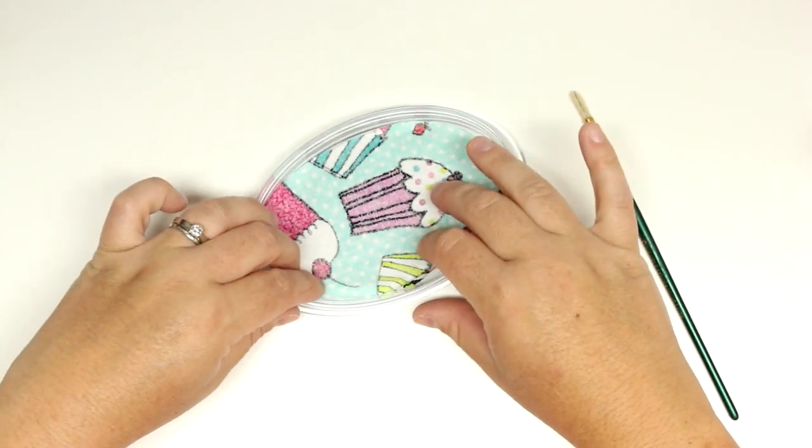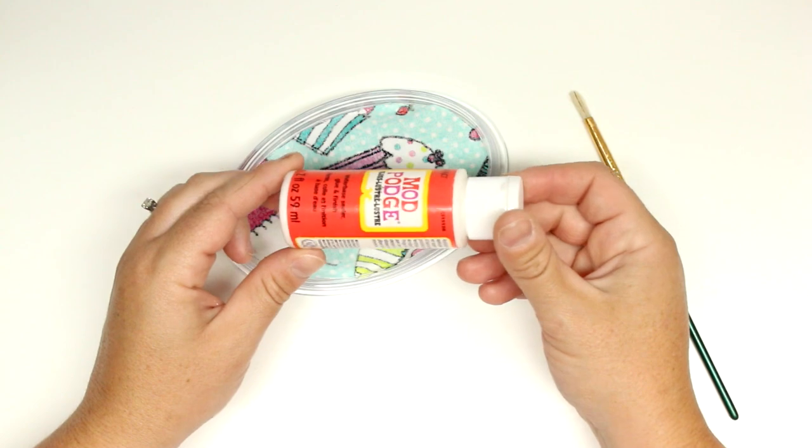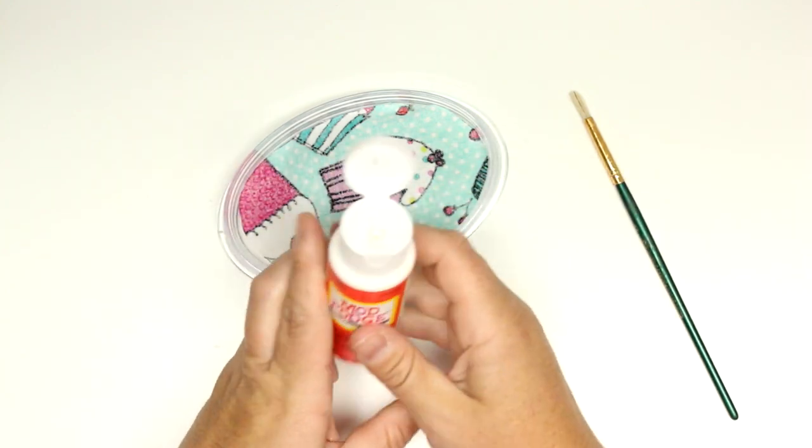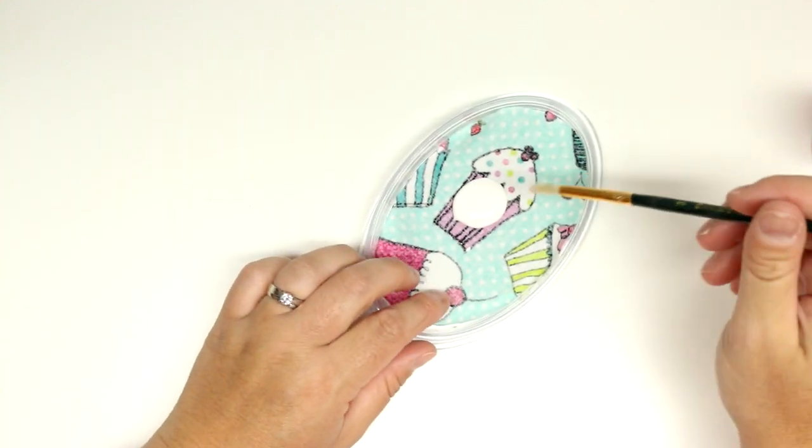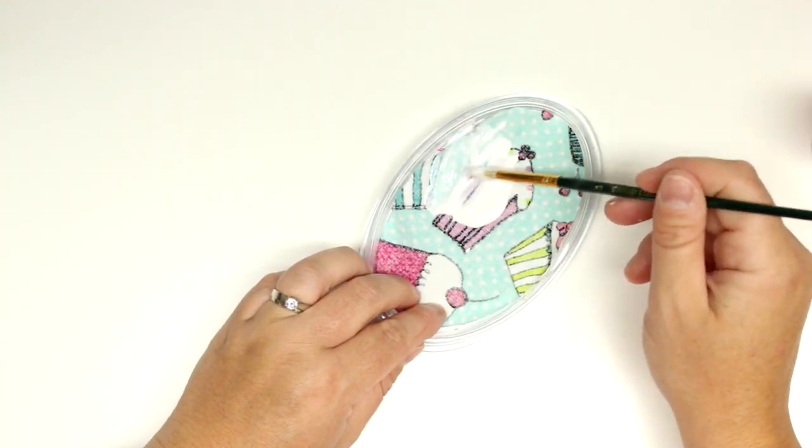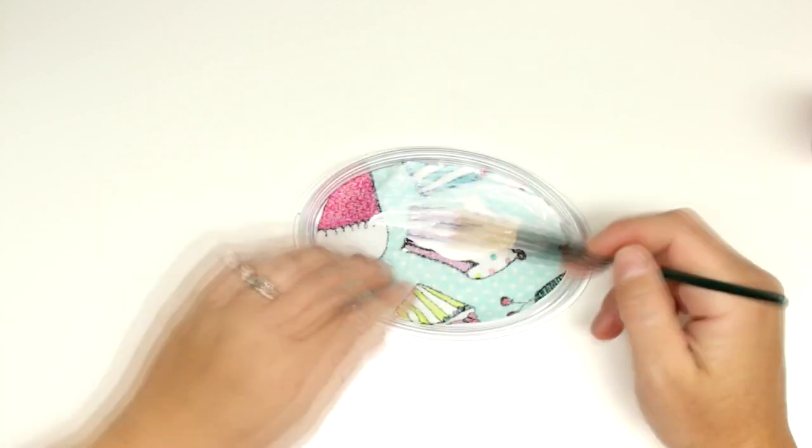And then I'm just going to use some Mod Podge and spread it all over the bottom. Saturate the fabric so that it sticks. The Mod Podge will dry clear, so you don't have to worry about that.